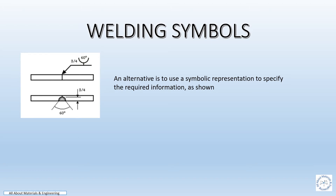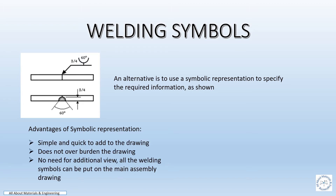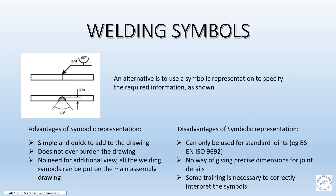Now we will see the advantages and disadvantages of symbolic representation. Advantages: it is simple and quick to add to the drawing, it does not overburden the drawing, there is no need for any additional views, and all the welding symbols can be put on a main assembly drawing itself. Disadvantages: it can only be used with reference to standard joints, and there is no way of giving precise dimensions for joint details.